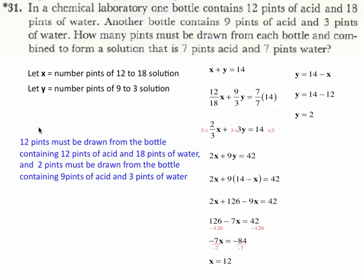So 12 pints must be drawn from the bottle containing 12 pints of acid and 18 pints of water, and 2 pints must be drawn from the bottle containing 9 pints of acid and 3 pints of water. And that's it for question number 31. Have a good day.